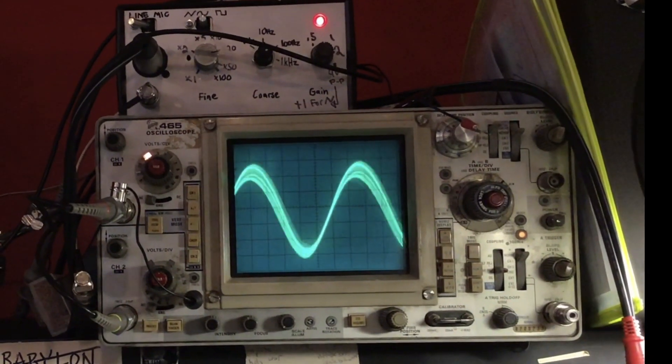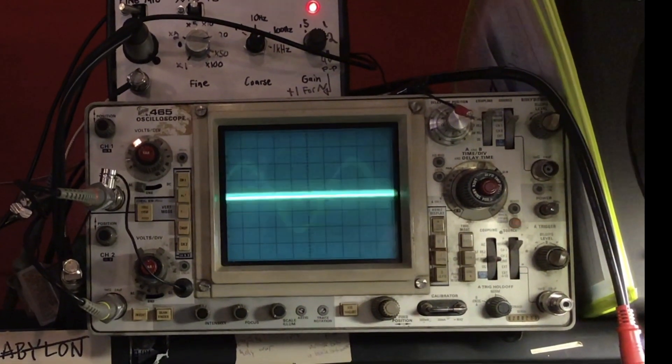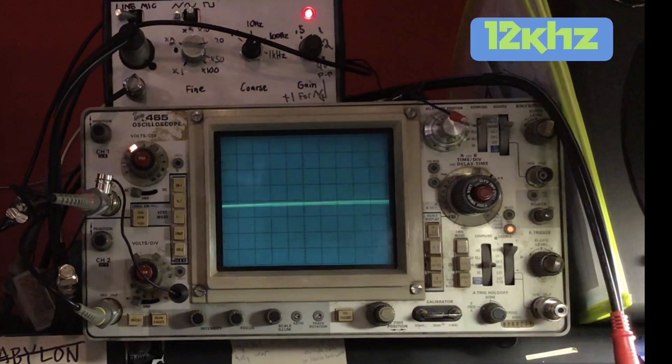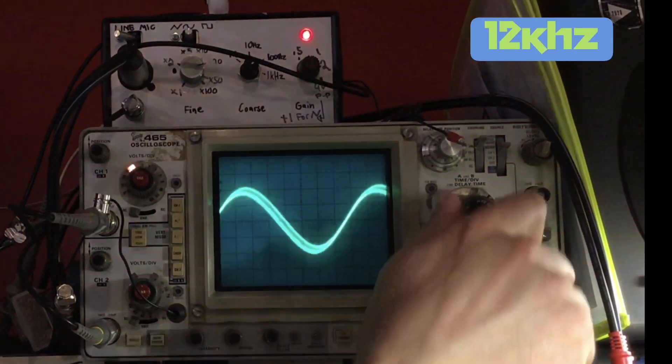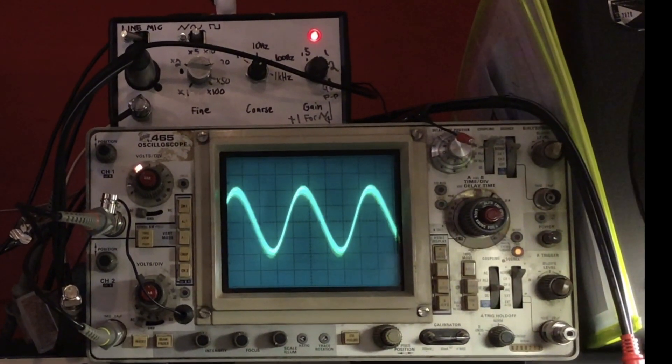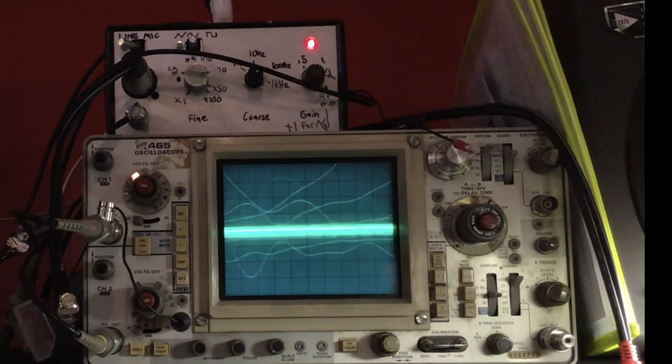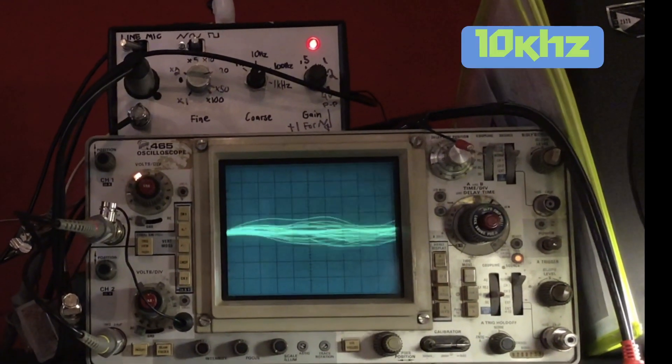this is high frequency response with a very clean looking sine wave, which is a good thing. 12kHz, a little lower than the 15,000, still very clean. 10,000 cycles—you can see the level has come down just a little bit. There's some distortion there in the sine wave.